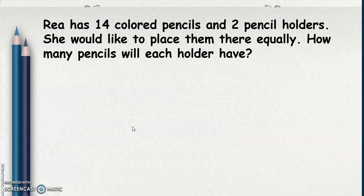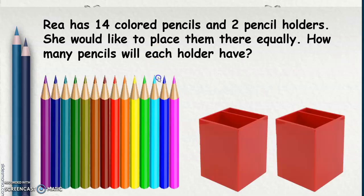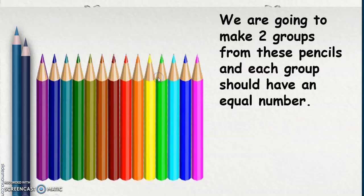Now let's have another example. Rhea has 14 colored pencils and 2 pencil holders. She would like to place them there equally. How many pencils will each holder have? We are going to make 2 groups from these pencils and each group should have an equal number.